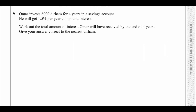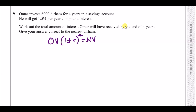Number 9: Omar invests 6,000 dirhams for four years in a savings account at 1.5% per year compound interest. This tells us to use the formula: New Value = Original Value × (1 + rate)^n, where n is the number of periods — here, to the power of 4.